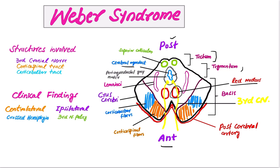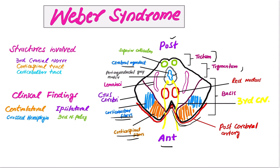These are the red nucleus, and this portion is the crus cerebri, which contains corticobulbar fibers and corticospinal fibers. This is the basilar artery and these are the perforating branches of the posterior cerebral artery.